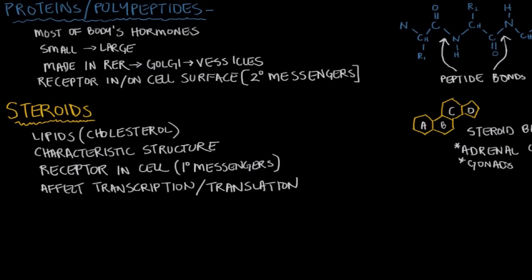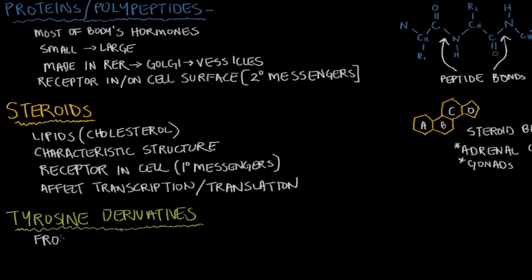The third major type of hormones by structure are tyrosine derivatives. Tyrosine derivatives come from the amino acid tyrosine. You might ask why these get their own major class if they're also made of an amino acid. What makes them special is: A, they're made of just one amino acid — tyrosine — that is manipulated to make these hormones; and B, these hormones derived from tyrosine can sometimes act like proteins and polypeptides, and sometimes act like steroids. So they really get their own class.